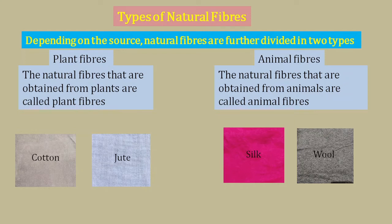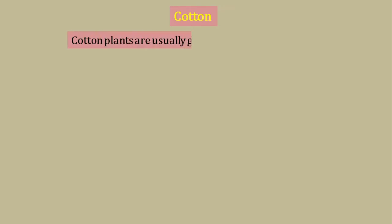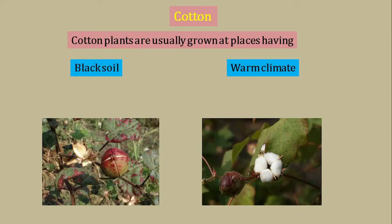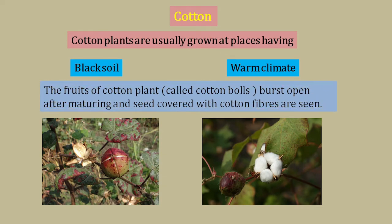Now we will discuss some more detail about plant fibers. First is cotton. Cotton plants are usually grown at places that have black soil and warm climate. When the fruits of cotton plants are mature, they burst open and cotton fibers are seen with the seeds of cotton covered in them.